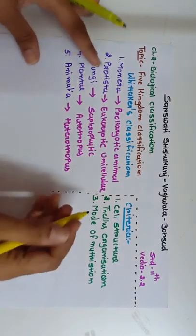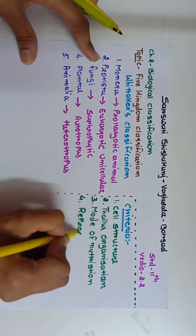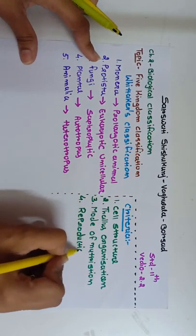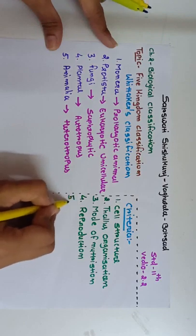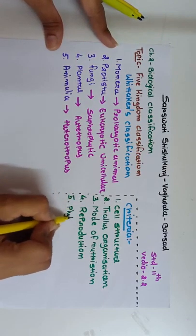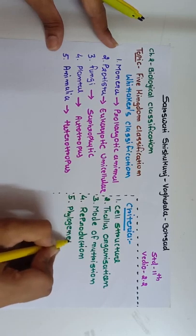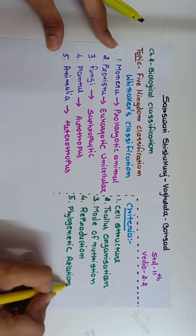The fourth criteria is reproduction — which type of reproduction takes place in every kingdom, such as sexual, asexual, and syngamy. These are the various types of reproduction. The fifth criteria is phylogenetic relationship.